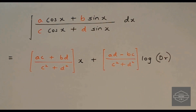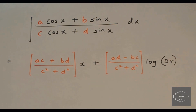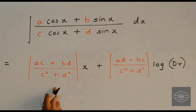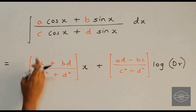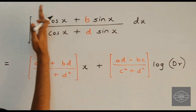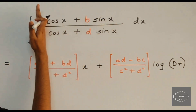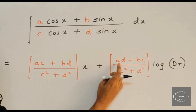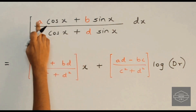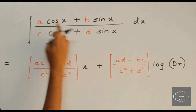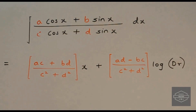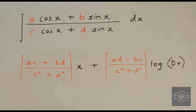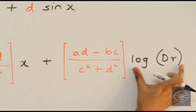The formula is a little lengthy but still very simple to memorize. In the first term we write ac plus bd — here ac and bd represent two parallel lines. In the second term we write ad minus bc — here ad minus bc follows a criss-cross pattern. And with the first term we write x, and with the second term we write log of the denominator.